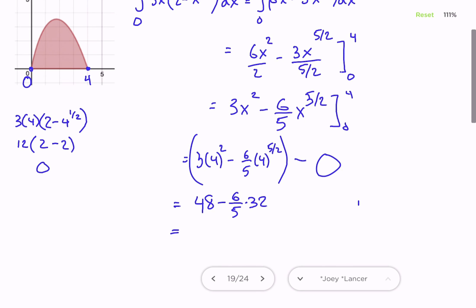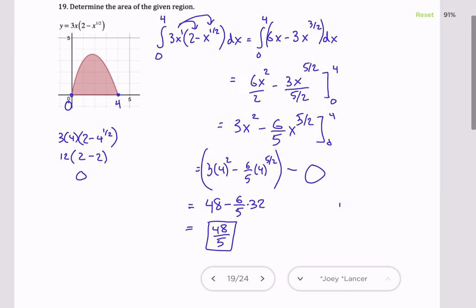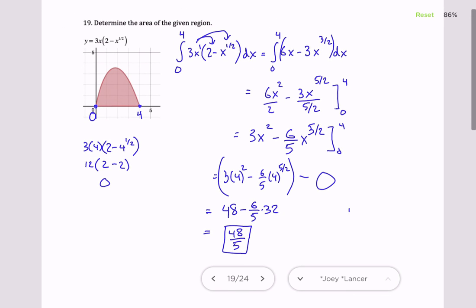And so if we were to simplify this down, I think we end up with 48/5. Okay, so you can just put it in a calculator, use MathFrac, or turn the decimal into fraction, and there would be your area.